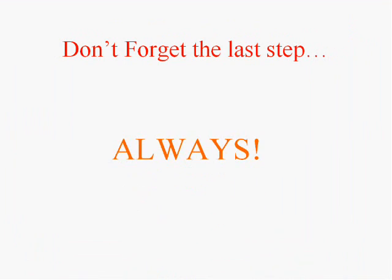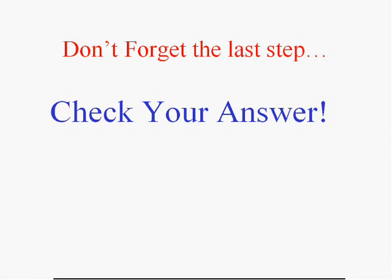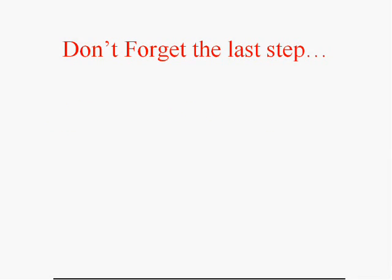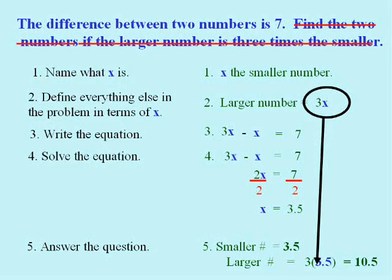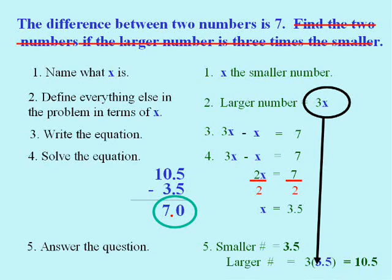No, because you better know that you have to check your answer. Let's see if it's reasonable. The difference between these two numbers is supposed to be seven. Difference infers subtraction. Ten point five minus three point five. I'm feeling real good about this because their difference is seven. You'll need to know those steps. They'll work every time.